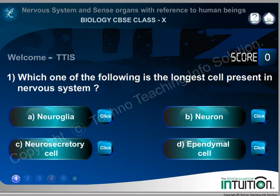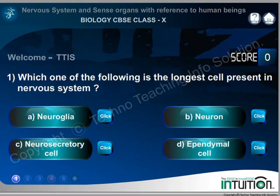Which one of the following is the longest cell present in the nervous system? A. Neuroglia, B. Neuron, C. Neurosecretary cell, D. Ependymal cell. Right answer: B. Neuron.